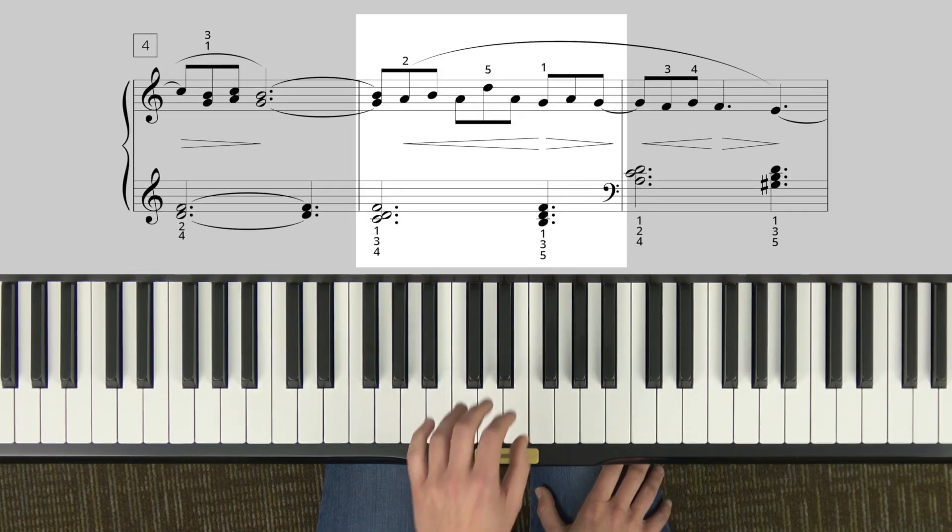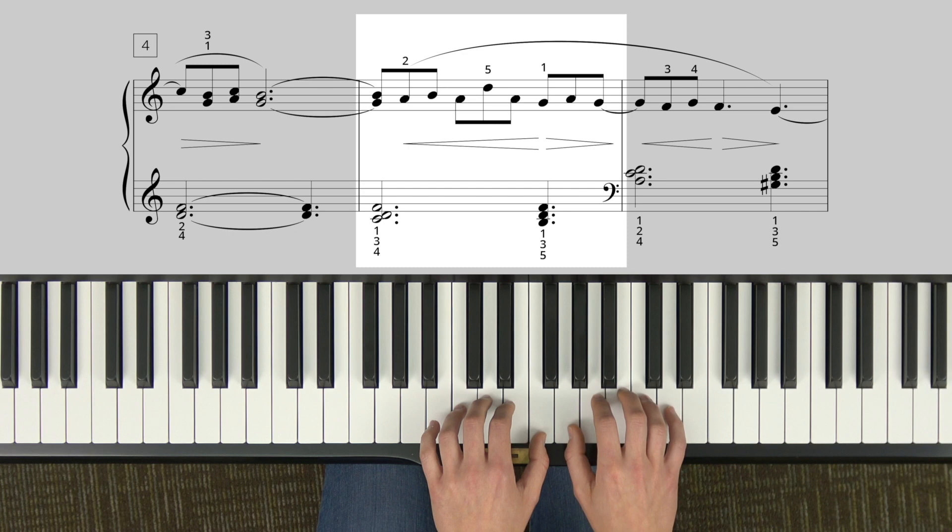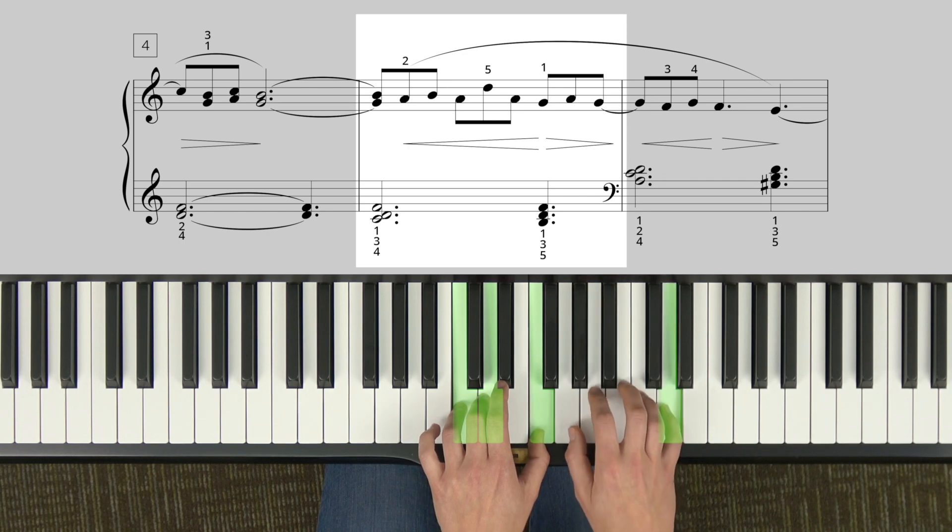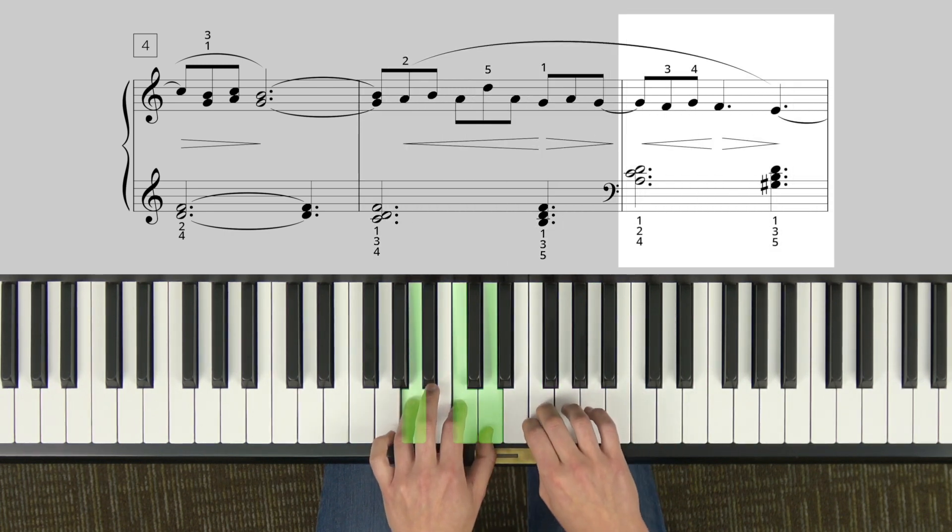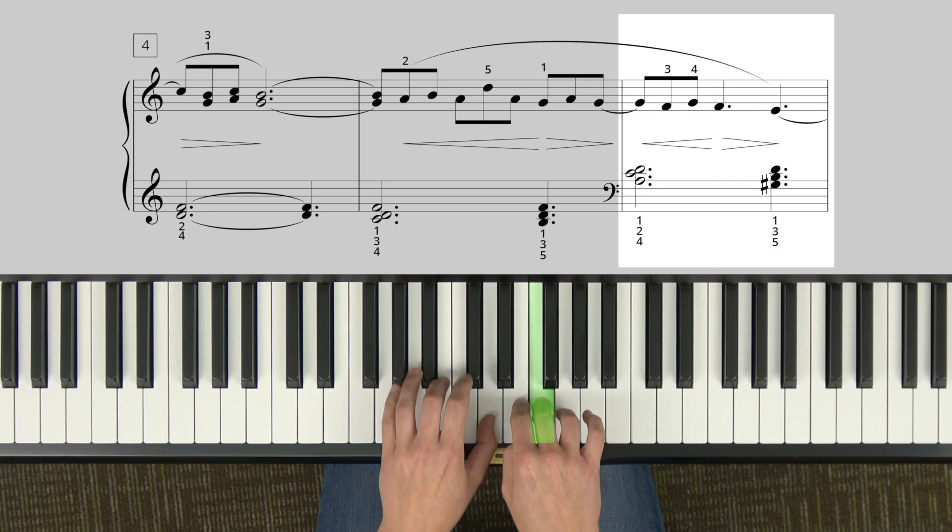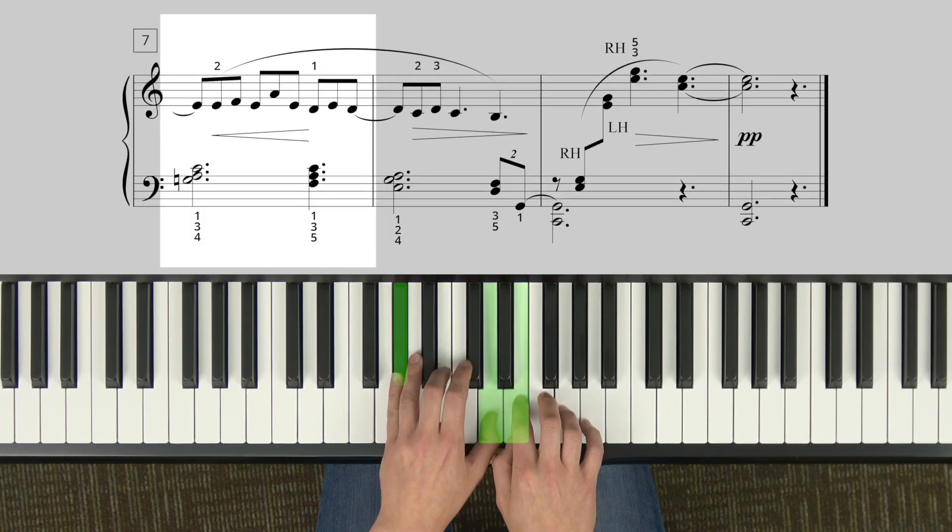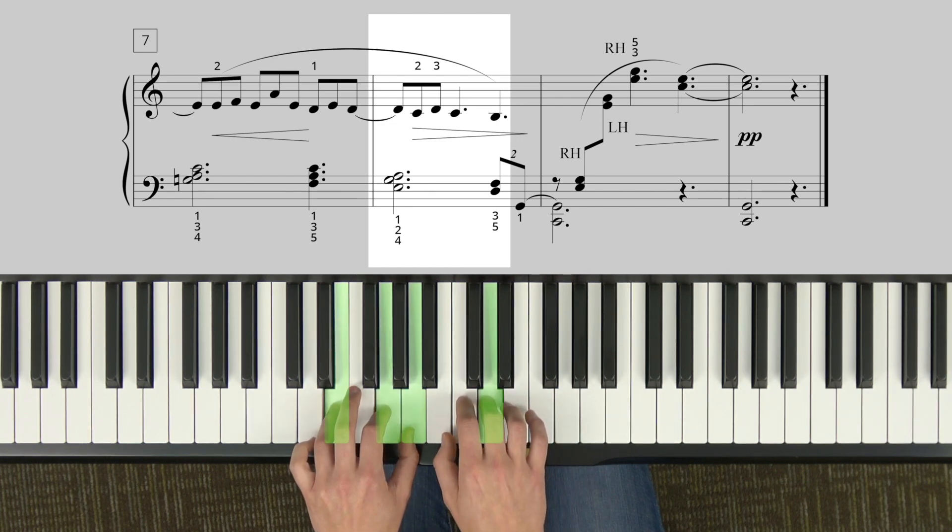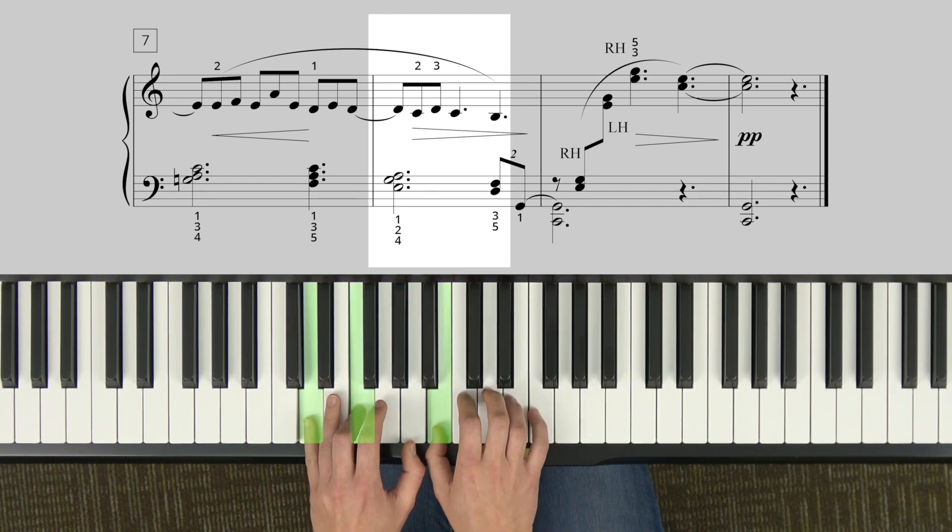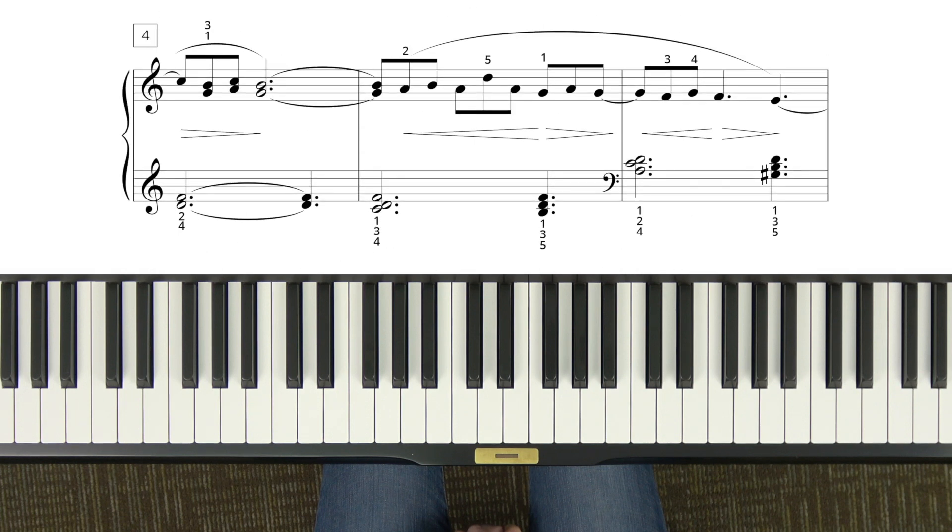Okay, putting hands together for that section. The left hand will start with thumb on F, right hand in G position. Left hand first. Two, three, two. Hands together. Left hand moves. Three finger. Left hand moves. Hands together. Left hand. Go back and review that as many times as you need. It's the hardest part of the song, so stick with it.